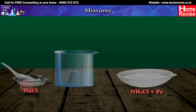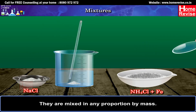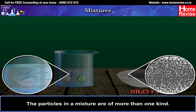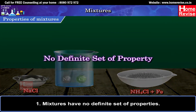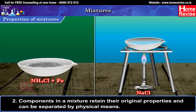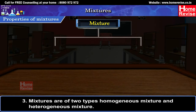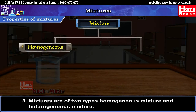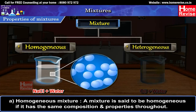Mixtures: A mixture contains two or more substances — elements, compounds, or both — mixed in any proportion by mass. The particles in a mixture are of more than one kind. Properties of mixtures: 1. Mixtures have no definite set of properties. 2. Components in a mixture retain their original properties and can be separated by physical means. 3. Mixtures are of two types: homogeneous mixtures and heterogeneous mixtures. A mixture is said to be homogeneous if it has the same composition and properties throughout.